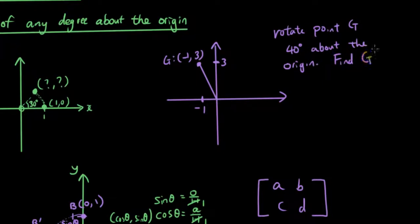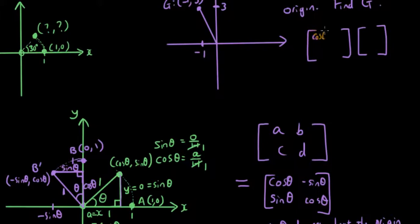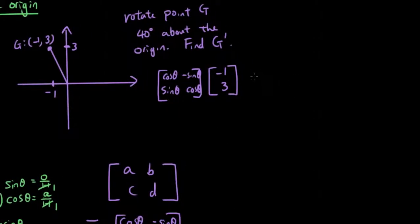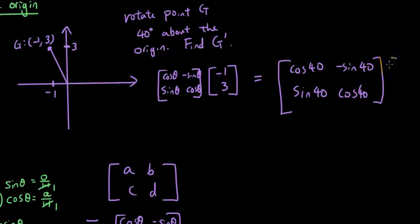Let's say 40 degrees about the origin. Find G'. So how do I do that? Well, let's multiply the transformation matrix, which is cos(θ), negative sin(θ), sin(θ), cos(θ), by point G, which is negative 1, 3. So if we keep working on that, cos(θ) is 40 degrees. So cos(40), negative sin(40), sin(40), cos(40), multiply by negative 1 and 3. So let's type these 4 numbers into the calculator to get the answers.